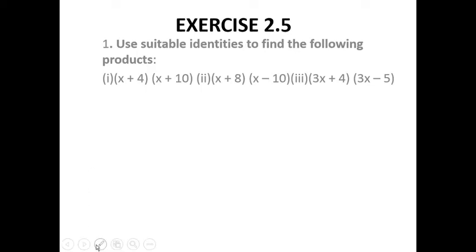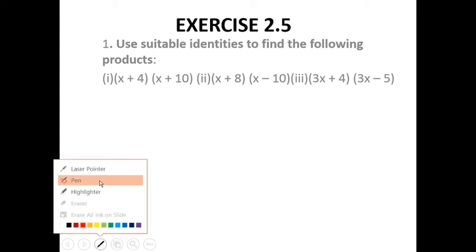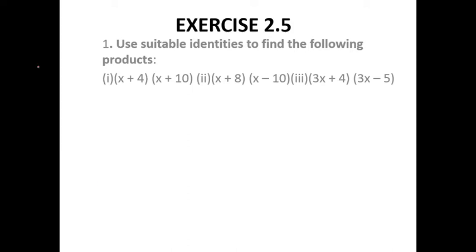Today I want to explain Exercise 2.5. We have already learned all eight important identities in the last lecture. If we know the identities properly, we can solve these sums. The relevant identity here is (x + a)(x + b). I will first write the identity and then explain the whole sum.